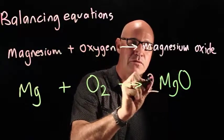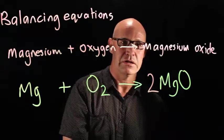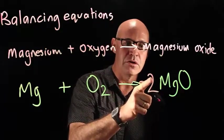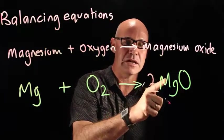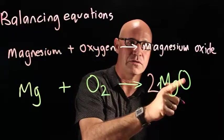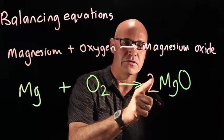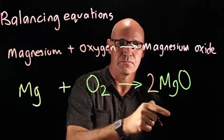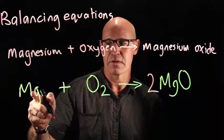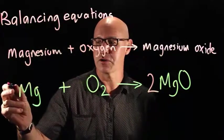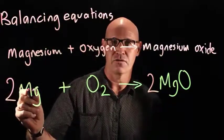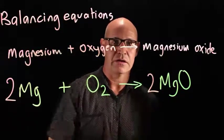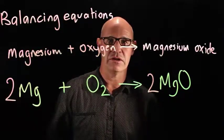We've got two oxygens on the reactant side and one on the product side, so we put a coefficient of 2 in front of MgO. Now that means we've got two oxygens. Going back to check magnesium — this coefficient of 2 means two magnesiums and two oxygens. So we've got two magnesium on the product side and one on the reactant side, so we put a coefficient of 2 in front of Mg. Now our equation is balanced.